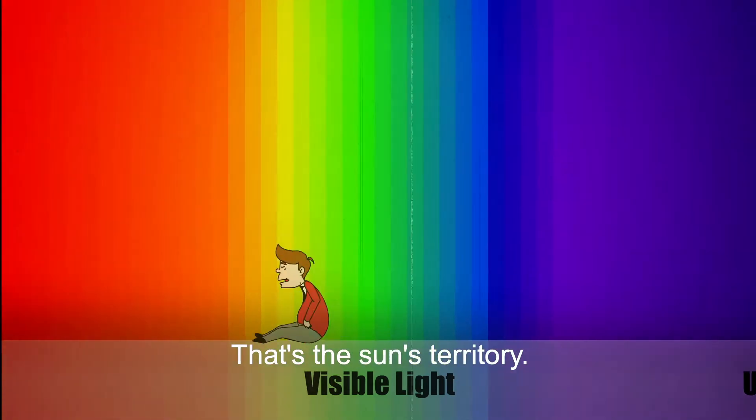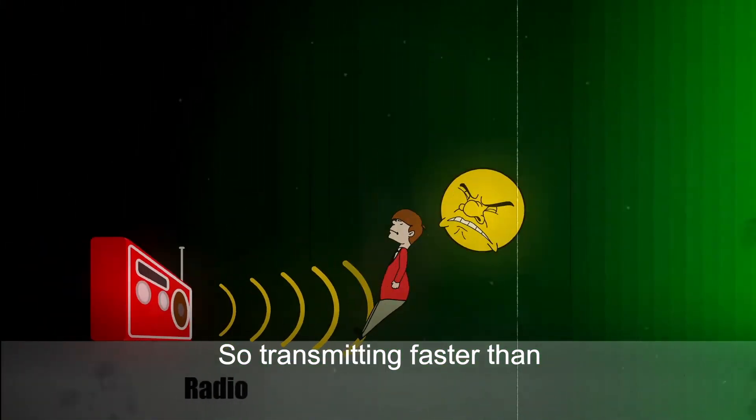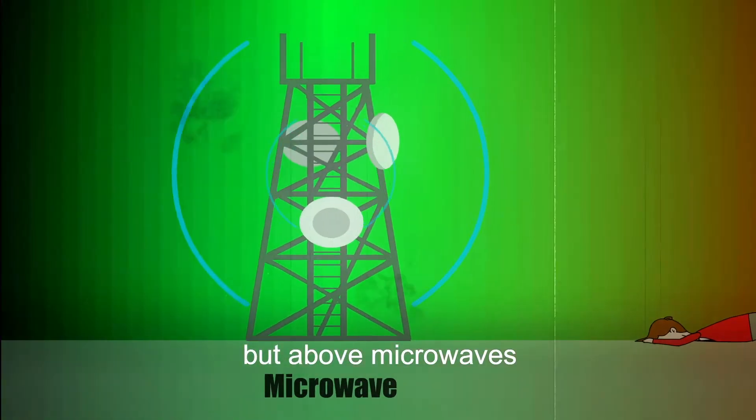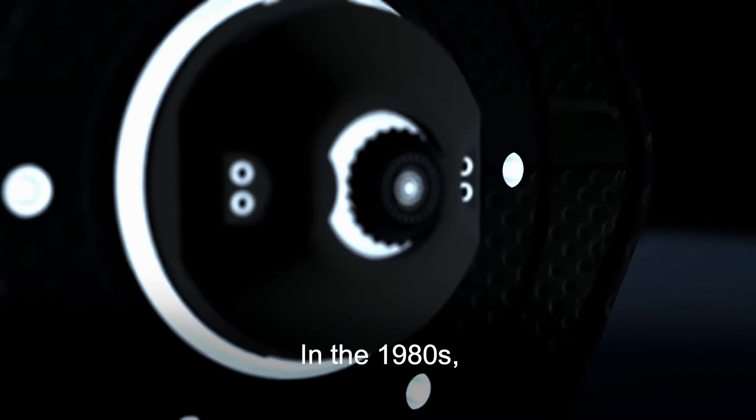So what's left? Well, forget visible light. That's the sun's territory. And we're already broadcasting on these slower frequencies, so transmitting faster than we transmit today leaves us here, below infrared but above microwaves, in a section called the terahertz spectrum.